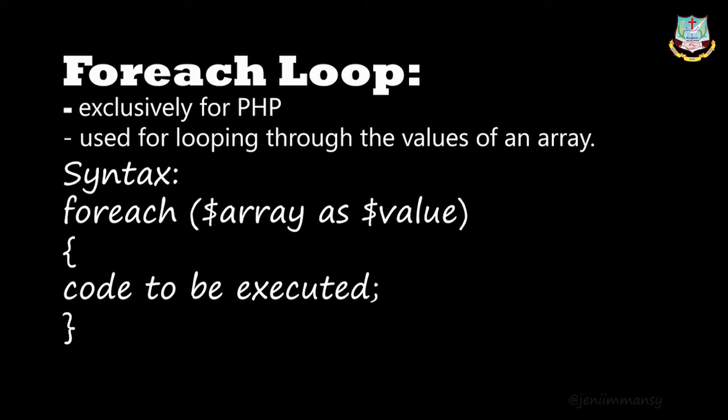This for-each construction provides an easy way to iterate over arrays. When you have an array, this for-each loop will give the output easily. This works only on arrays and objects. It will issue an error when you use it on a normal variable. For a normal variable, you use for loop. If it is an array, you use for-each loop.